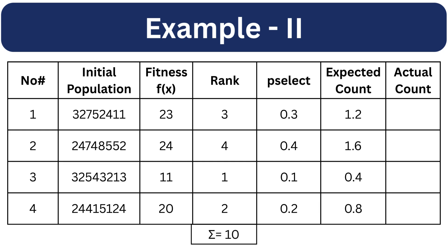Now we calculate the expected count by multiplying the selection probability with the total number of population. After rounding them off, we will get these values. Individual 1 will be selected one time, individual 2 will be selected two times, individual 3 will not be selected and individual 4 will be selected one time.